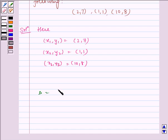Now the required area using the formula given in the key idea, we get 1/2 times the determinant |2 7 1; 1 1 1; 10 8 1|. Now solving this we get